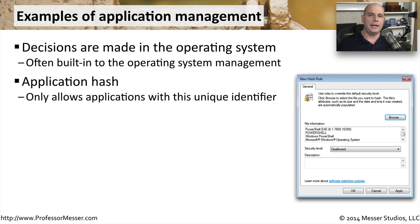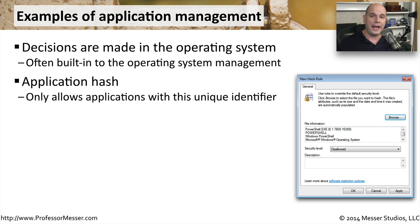If we're going to add an application to a whitelist or a blacklist, we'll need to identify it in some way. Identifying it just based on a file name is not something that's very secure, since other applications can simply use the same file name and get around that kind of restriction. Instead, we tend to use something like an application hash. We get a hash value of the contents of that executable, which means that every executable is going to have a very unique hash identifier. Even if you have two file names that are identical but the executable is different, they will have different hash values, so you'll be able to designate what applications are good or bad based on this very unique value.